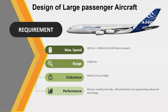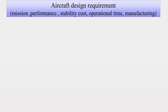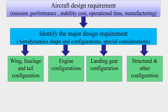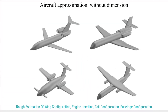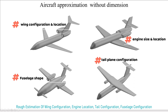With a range of about 15,000 kilometers and possibly reducing the landing and takeoff distance by augmenting advanced technology — based on these requirements, I have made four possible conceptual sketches. From here, we determine the design configuration that meets all the requirements and aligns to factors such as fuselage shape, wing configuration and location, engine size and location, tail configuration and location, and other features.